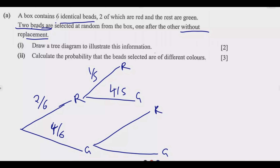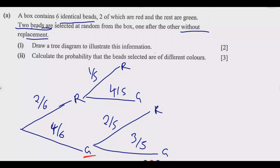On the other branch, if we picked red first, the chance of picking red again is now 1 out of 5. If in the first pick we chose green, the chance of picking green again on the second pick is 3 out of 5, since one green was removed. Note that at each branch, the probabilities must sum to 1 — if they don't, you've made a mistake.